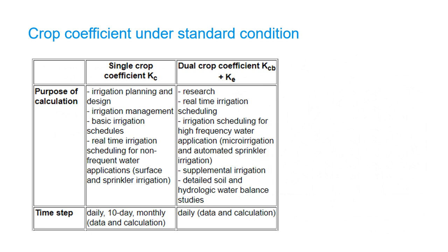Standard conditions means no limitations on crop growth due to water shortage, crop density, or disease, weed, insect, or salinity pressures. There are two methods for crop coefficients under standard conditions.